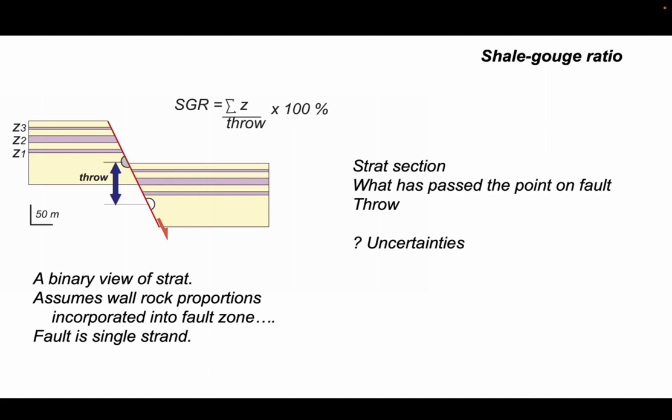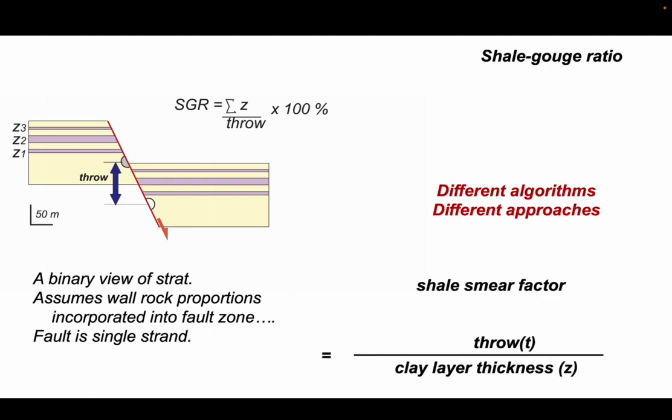So for a shale gouge ratio we need to know the stratigraphic section and we need to know what part of that section has passed a particular point on the fault, and we need to know the throw. So there may be uncertainties in both of these values in reality. The SGR has a binary view of stratigraphy, just sandstone or shale. It assumes that the proportions of these units that we see in the wall rock are incorporated in those proportions into the fault zone. It also assumes of course that the fault is a single strand. And these assumptions also apply to the shale smear factor.